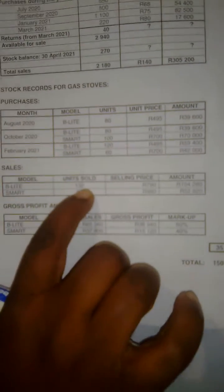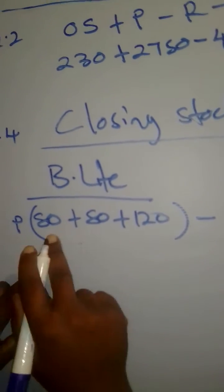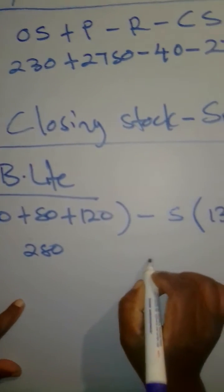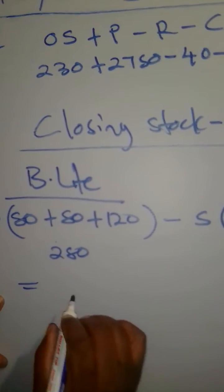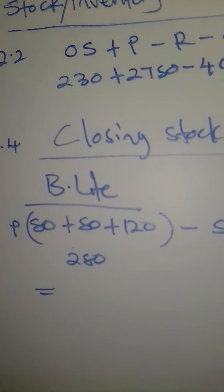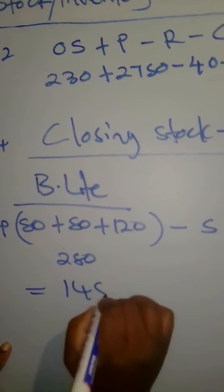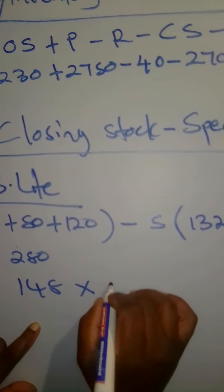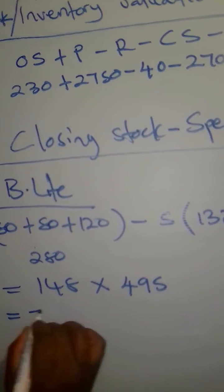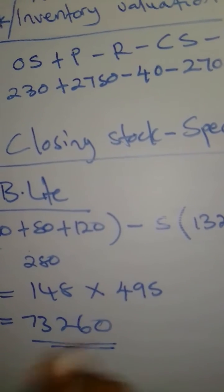The sales: 132 items were sold. So 80 plus 80 plus 120 equals 280, minus 132, we remain with 148 units. The amount is R495 per unit, which gives us a total of R73,260. This is the closing stock value for the B-Light model.